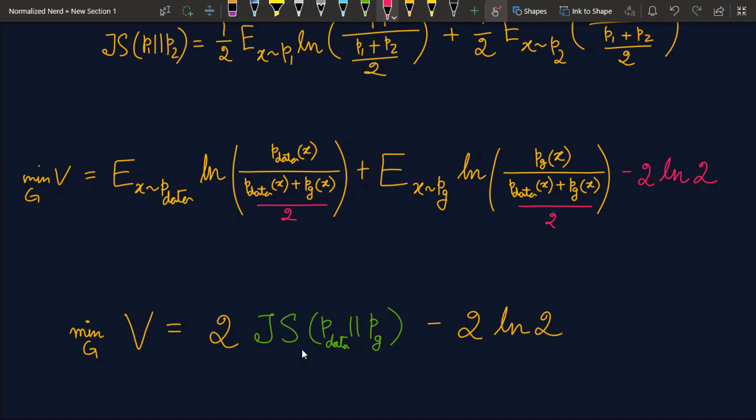And it will attain zero only when P1 is equal to P2. That is if Pdata is equal to Pg, then only this term will be zero. And the whole expression will attain its minimum. That is minus 2 ln 2. So voila! Now we have proved that at the global minimum of our value function, the Pg will be exactly same as Pdata. And our generator is actually trying to attain that state.